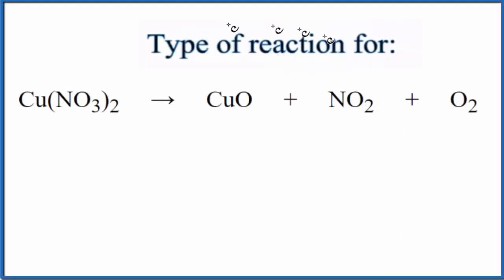In this video, we'll look at the type of reaction for Cu(NO3)2 breaking down into CuO plus NO2 plus O2. This is copper-2 nitrate.